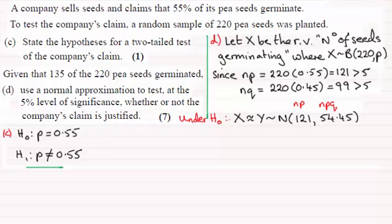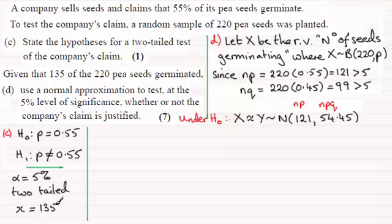So when it comes to working out our significance test here, let's just put down what the significance level is. We've got, we'll call it alpha. So this is not part C. Part C ended here. The significance level is 5%. What we're doing is a two-tailed test. And we've got an observed value, which we'll call X, and it was 135.